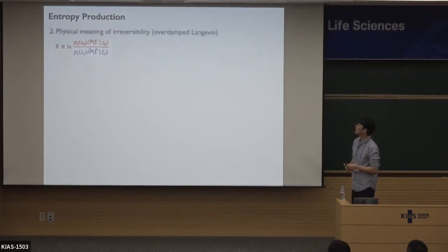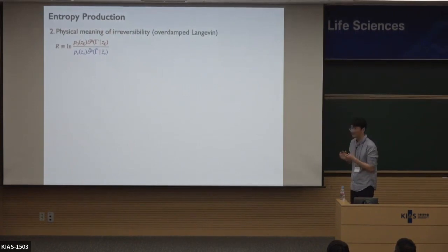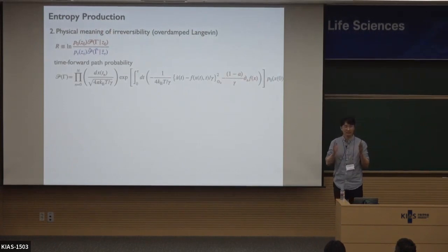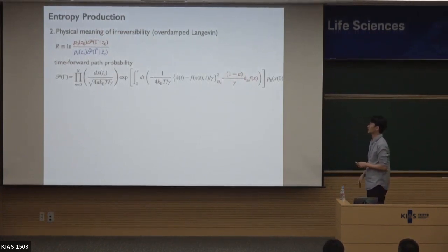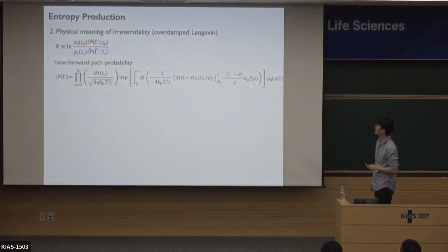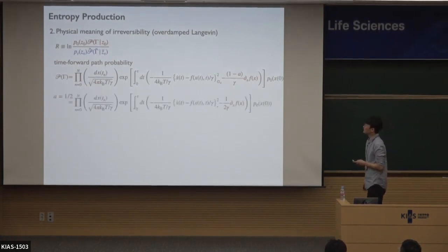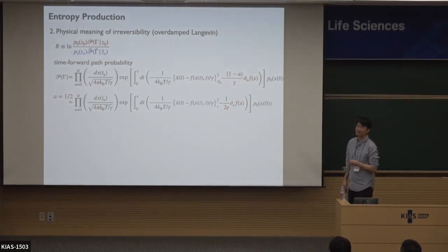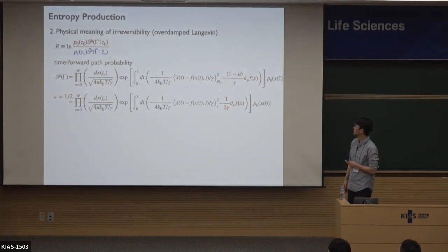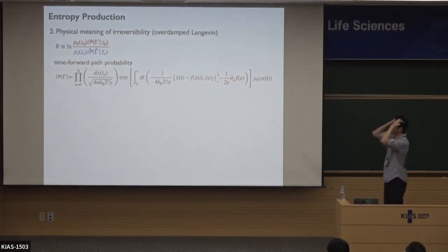Now let's look at the physical meaning of irreversibility for the overdamped Langevin system. We learned how to evaluate the time-forward path probability — it started from initial state x_0 with initial distribution, and using the Onsager-Machlup functional. For calculation convenience, I will choose A equal to one-half, which makes the product Stratanovich. This is the time-forward path probability.